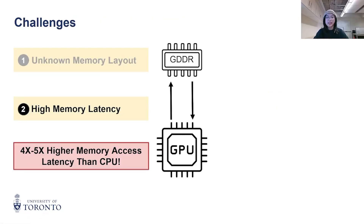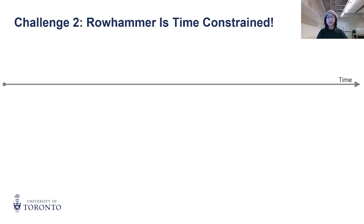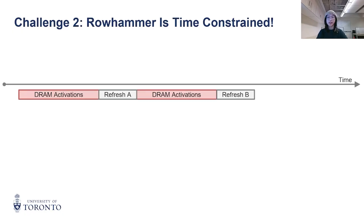The second challenge is GPU's high memory latency, which is 4 to 5 times higher than a CPU's. Therefore, GPU Rowhammer is subject to more strict time constraints. In DRAM, cells leak charge over time and must be periodically refreshed.